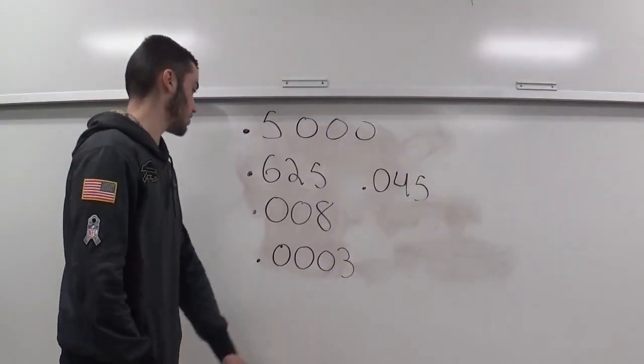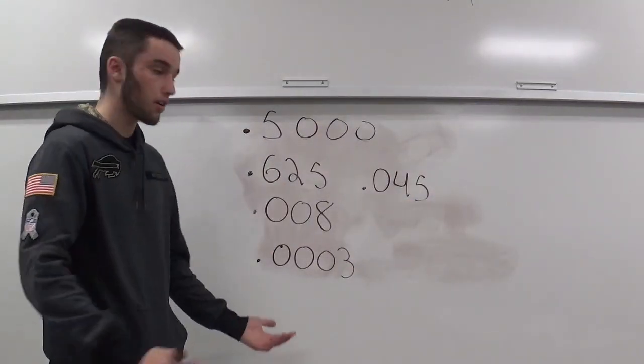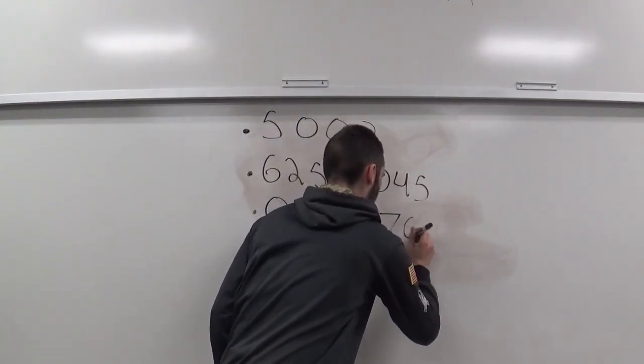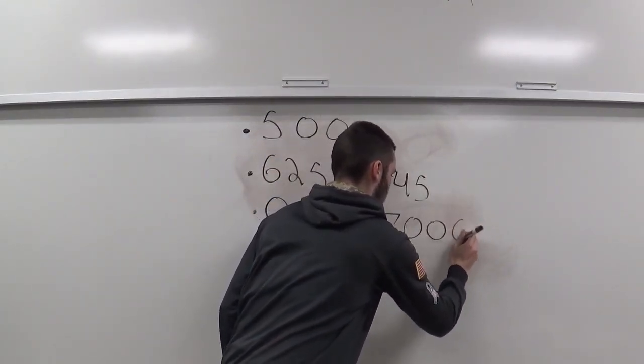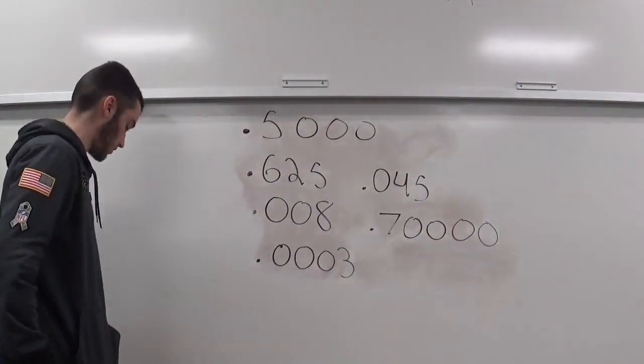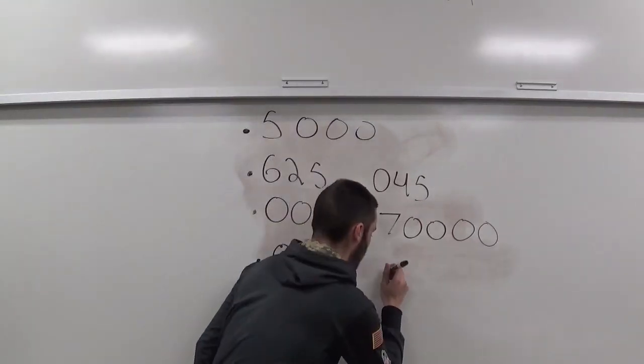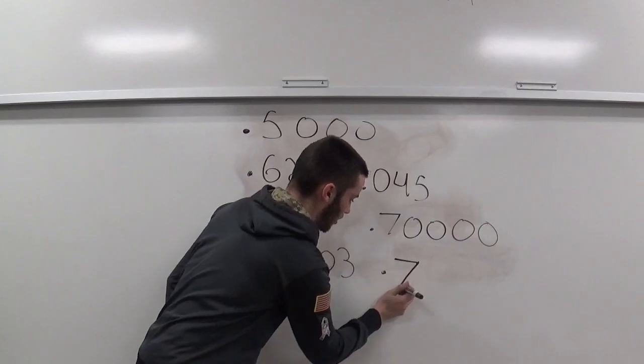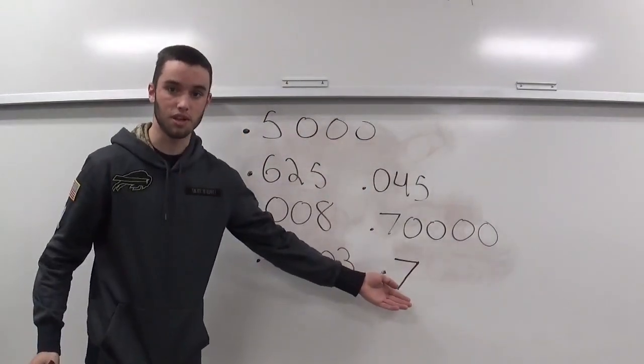If you wanted seven hundred thousandths, that's seven hundred thousandths even though I have all these zeros. Or if you wanted to make it easy, you could just write .7, that is also seven hundred thousandths.